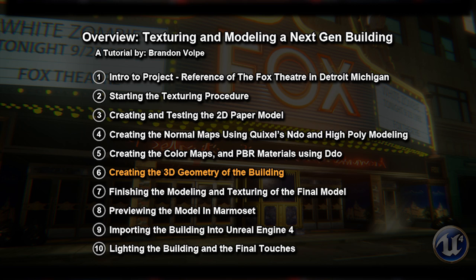In the sixth part of this lesson we'll be creating 3D low poly geometry for the final model. I'll be showing you techniques used to create the original models, and from reference we'll be making the final model. Since we've been using the grid this whole time, we'll be using that to make edge loops to cut the model and then delete the edges we don't need to lower the poly count.